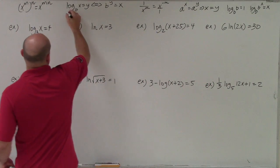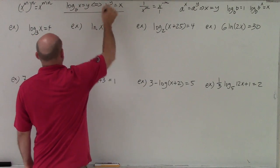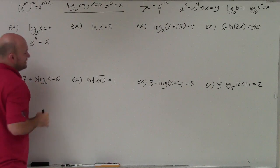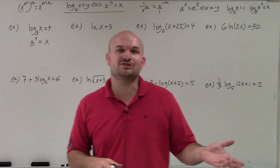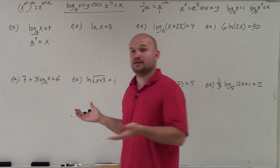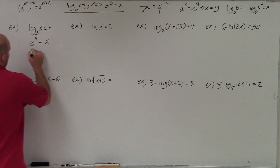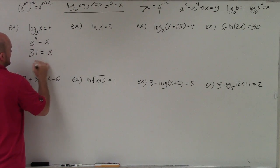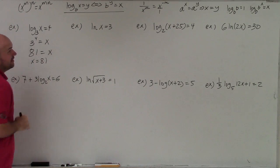By rewriting my logarithmic equation in exponential form, I can rewrite this as 3 to the fourth power equals x. Now to solve for x, all I need to do is take 3 to the fourth power. You could plug it into your calculator, or you may already know that 3 to the fourth power is 81. So x equals 81.